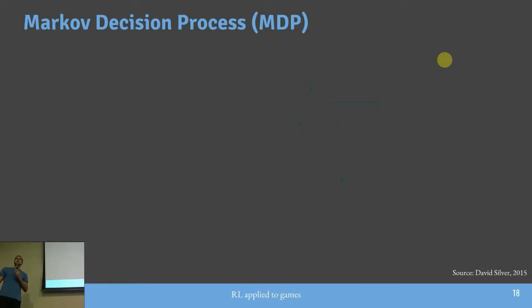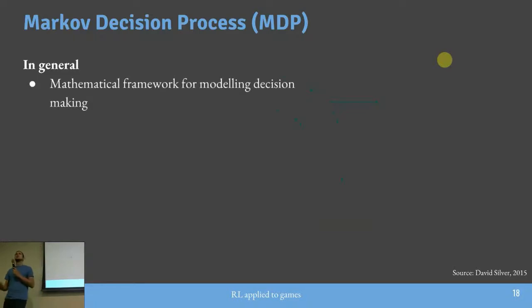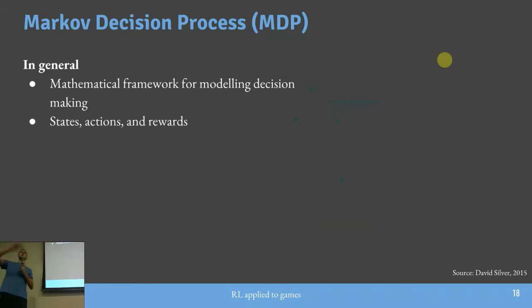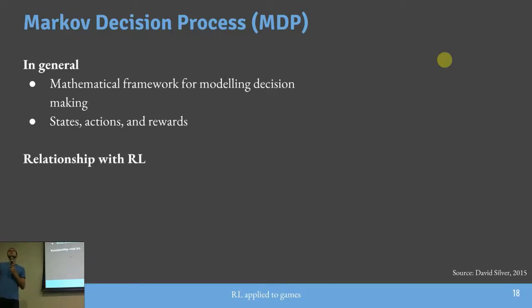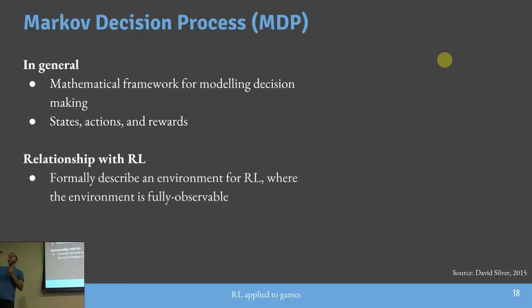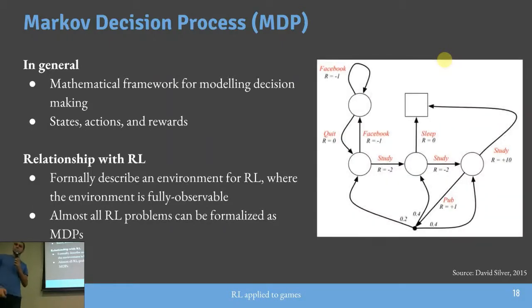Os problemas de Reinforcement Learning têm relação direta com o Markov Decision Process. MDPs são um framework matemático para modelar tomada de decisão, com estados, ações e recompensas. Quase todos os ambientes com os quais o agente interage podem ser formalizados como um MDP. Aqui há um exemplo de MDP simples, com estados representados por círculos, um estado terminal como quadrado, ações possíveis em vermelho e as recompensas associadas.